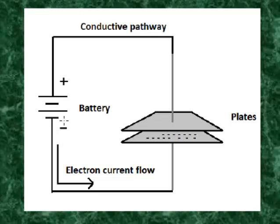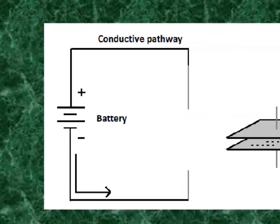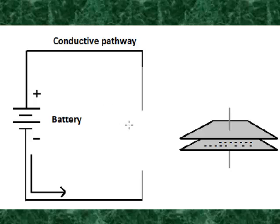The excess electrons build up on the surface of this plate because they are attracted to the positively charged plate. Once it's removed from the battery, the current flow ceases and the electrons that are towards the surface of this plate remain there.